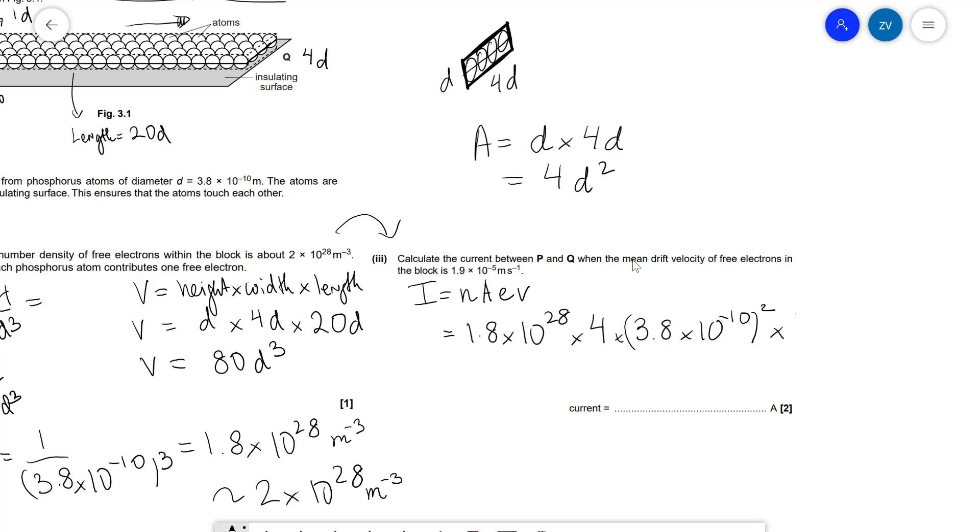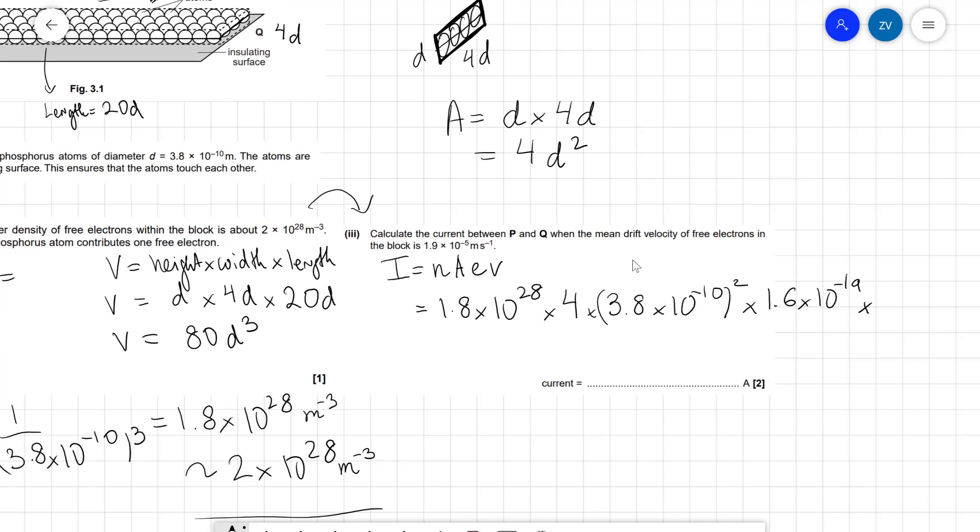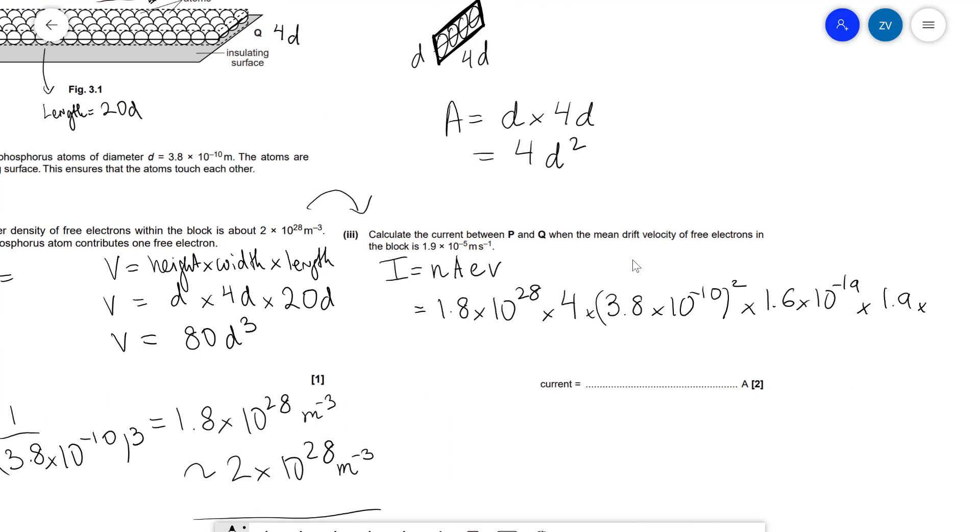Remember, e is the electron charge, so it's 1.6 × 10⁻¹⁹, times our mean drift velocity which is 1.9 × 10⁻⁵. Let's plug this into a calculator now.